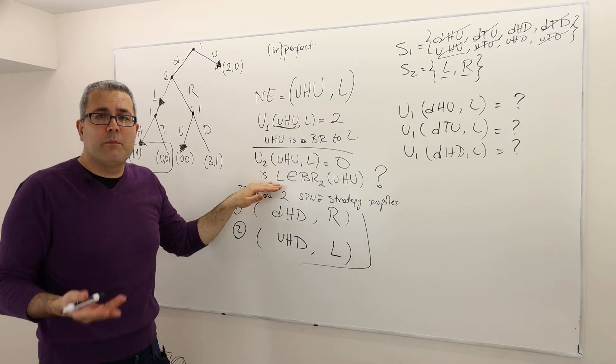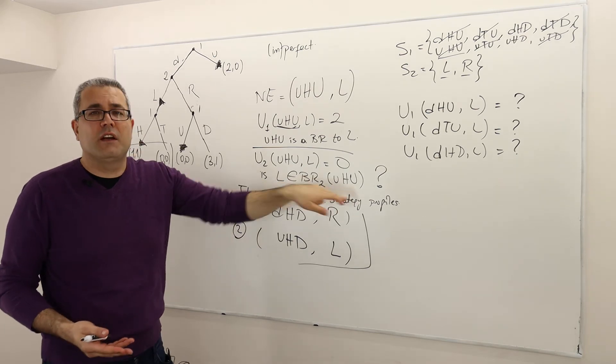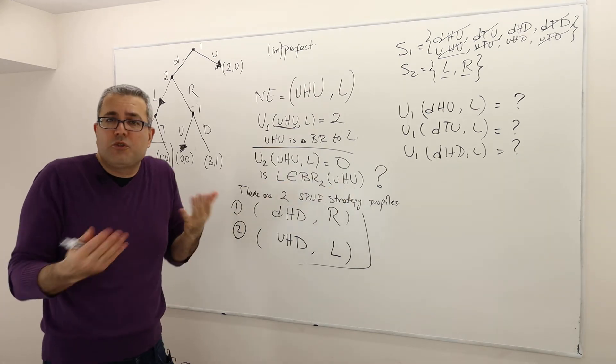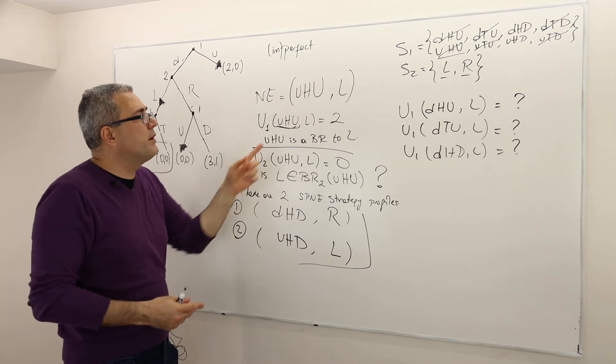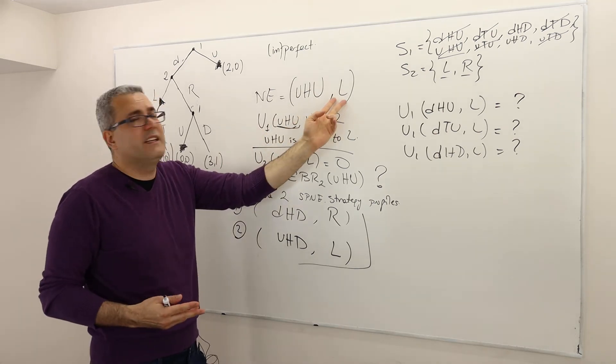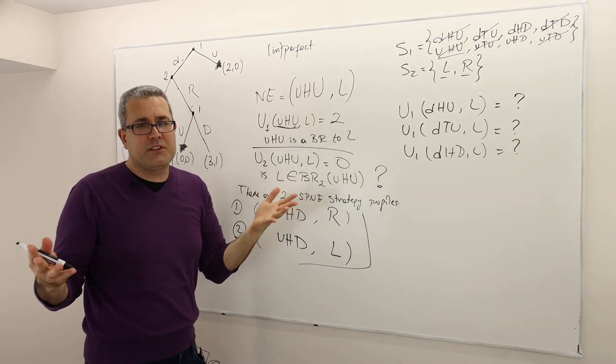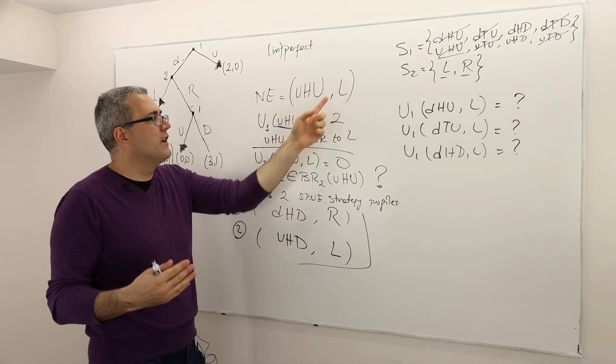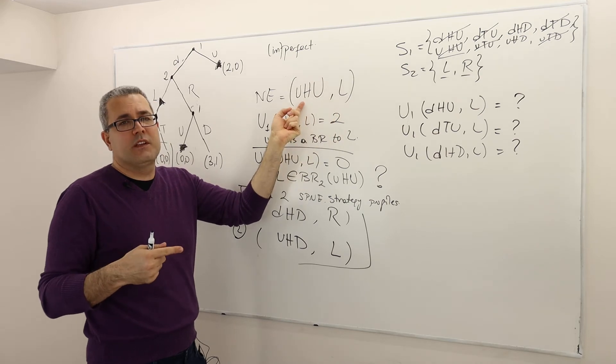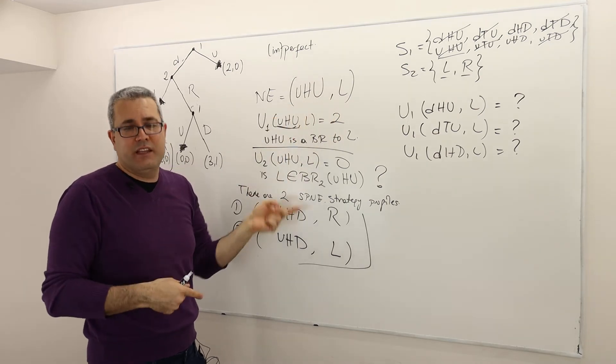The payoff she's going to get at the end is going to be zero. So therefore, L is the best response to this strategy. Yes, R is also best response, but fine. Remember, all I need to check is whether this is the best response. So I don't care all the best response strategies. All I care is, is L a best response to this? The answer is yes.